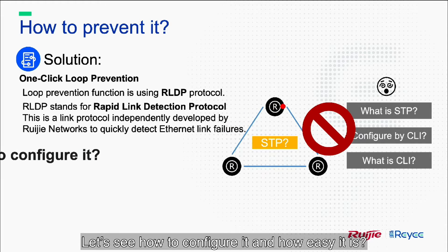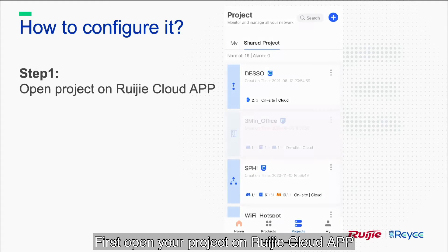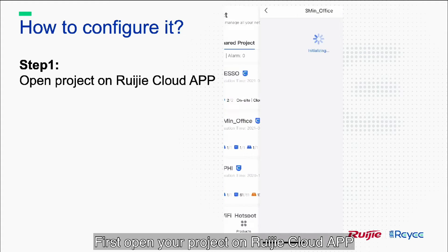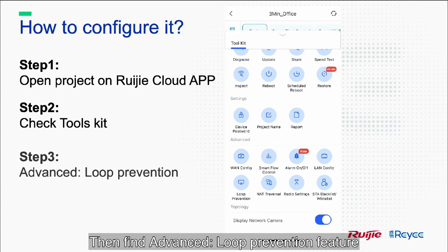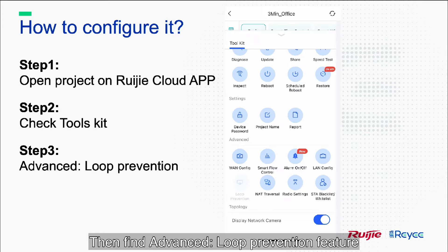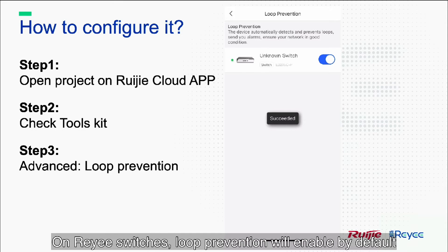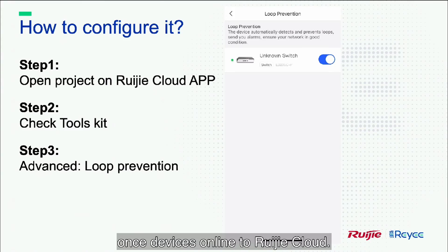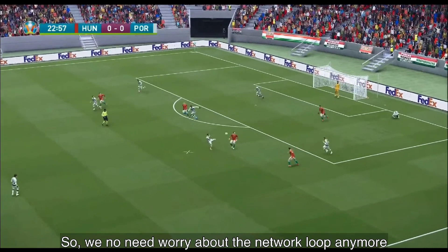Let's see how to configure it and how easy it is. First, open your project on the RegiCloud app. Next, check the toolbar. Then, find the advanced loop prevention feature. Now, you can find all switches with loop prevention enabled. On RAE switches, loop prevention will be enabled by default once the device comes online to RegiCloud. So we no longer need to worry about the network loop anymore.